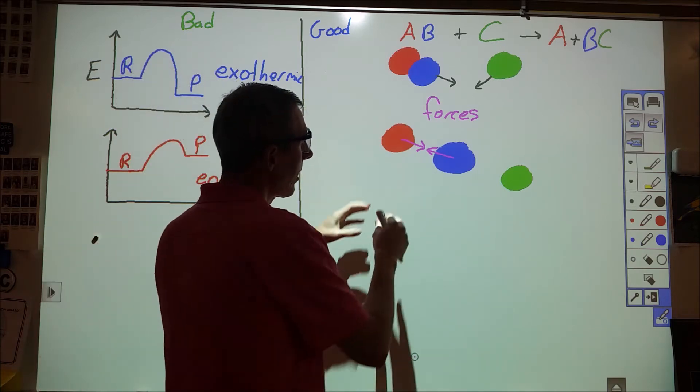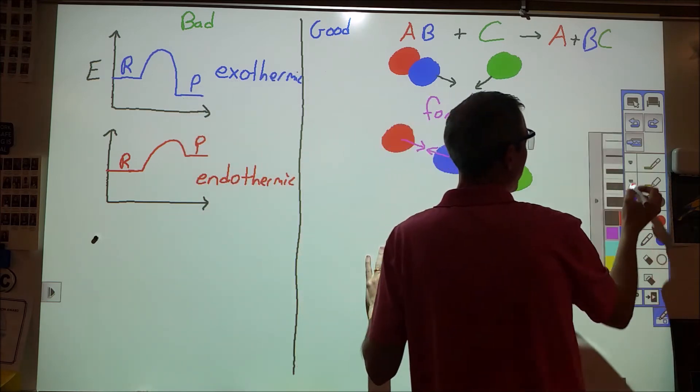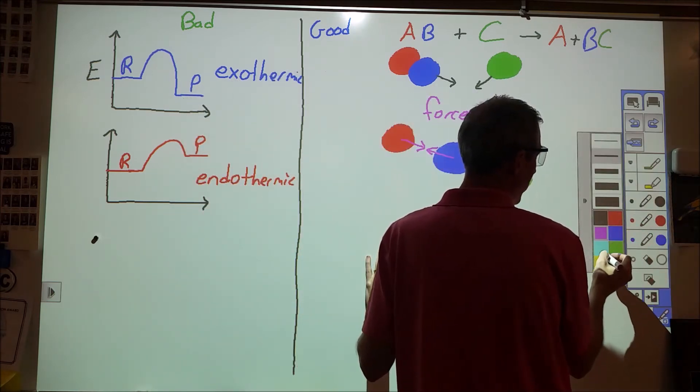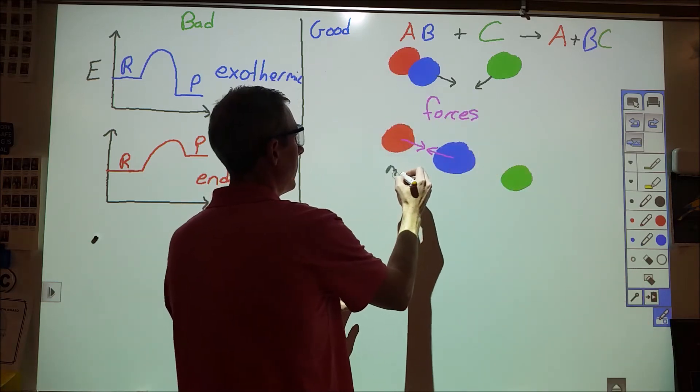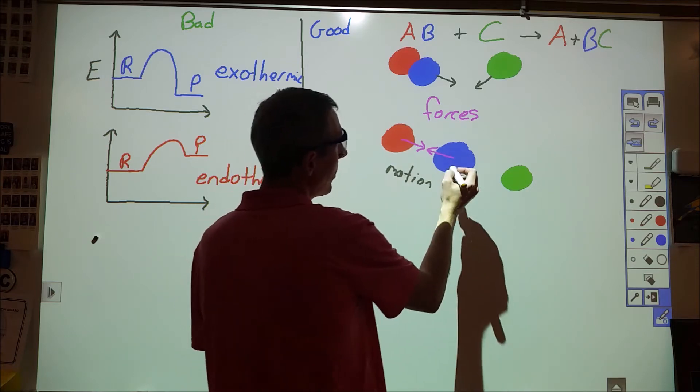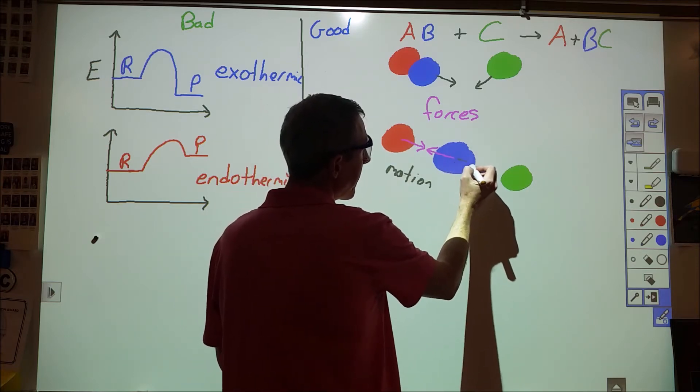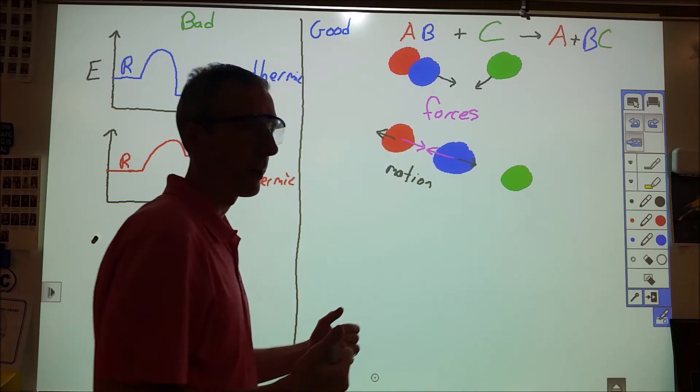And then we think, all right, well, if these are going to break that bond, they have to move apart from each other. So then we look at, okay, well, what's going on with the direction of motion? So in order for the bond to break, B has to move this way, and A has to move this way. They have to move apart from each other.